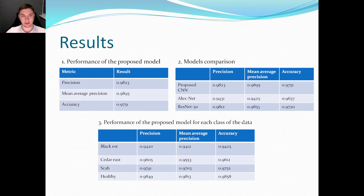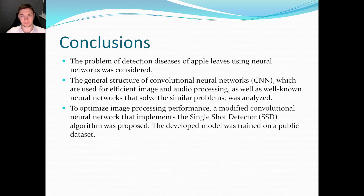Results. The first table shows the performance of the proposed model. The second table shows a model comparison between our proposed CNN, AlexNet, and ResNet-50. The third table shows the performance of the proposed model for each class of data.